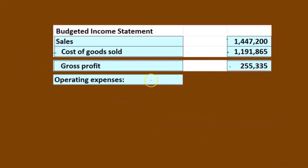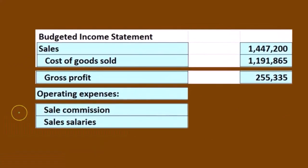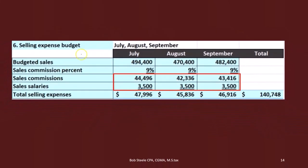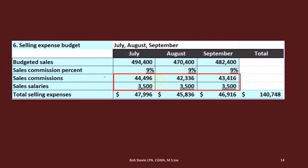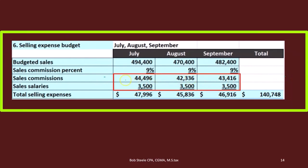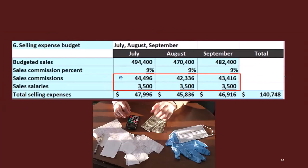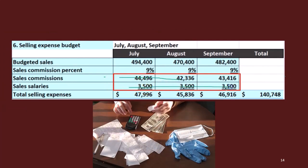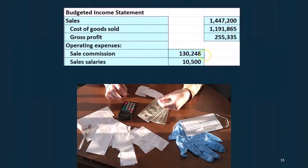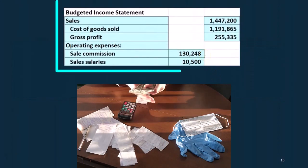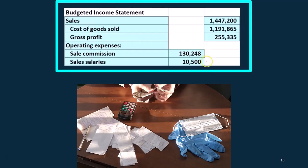Then we're going to have the operating expenses — all other expenses here. Within the operating expenses, we are going to have the sales commission and sales salary. We're going to pick those numbers up by jumping back to the selling expense budget. We didn't total them up in that budget, so we'd have to add them up — July, August, September for the sales commission and July, August, and September for the sales salary. If we add these up, we come up with $132,480 for the sales commission and $10,005 for the sales salary.